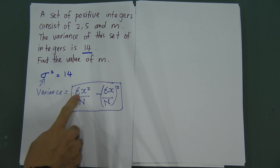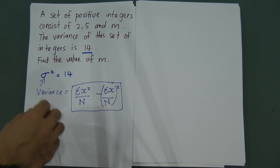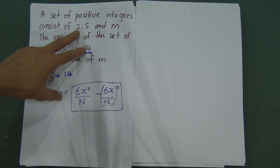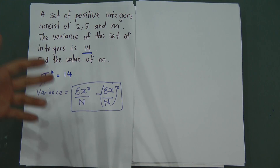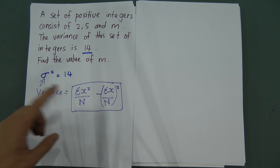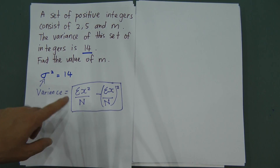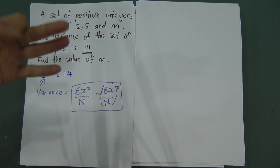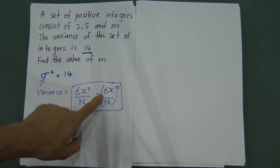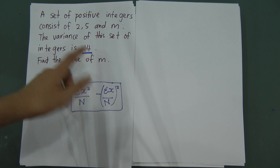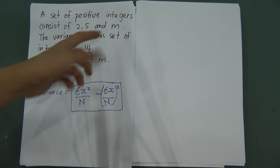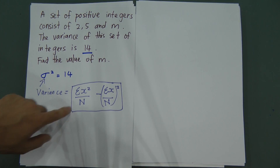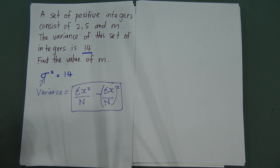Sum of x squared means you add all the numbers squared: 2² plus 5² plus M². Divide by n — we have 3 data points (2, 5, and M), so divide by 3. Then minus sum of x, which is 2 plus 5 plus M, divided by n, and then square the whole thing. That gives you the variance. This formula is for ungroup data.